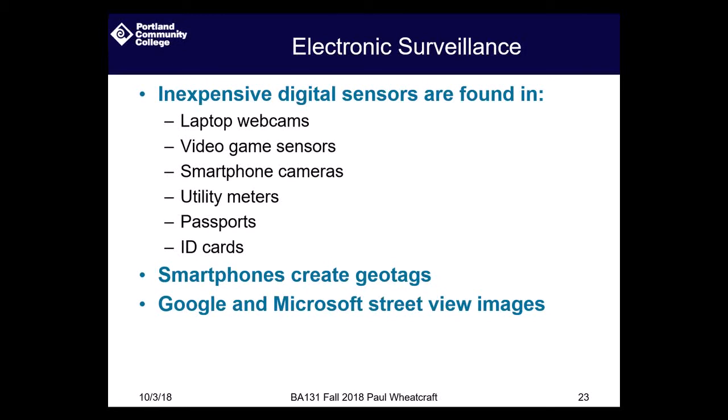Google and Microsoft have taken pictures of your home by driving down your streets, and that has caused problems — Google got into trouble in Australia for driving down streets and taking videos without people's permission. Additionally, satellite imaging has become very precise; some spy satellites have high-quality lenses that can zoom in from orbit and recognize someone's face.